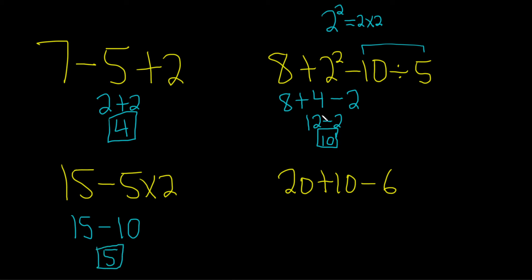The last one is really easy. It's only addition and subtraction. You just add 20 and 10 to get 30. Bring down the minus sign and bring down the 6. 30 minus 6 is 24. That's the final answer.